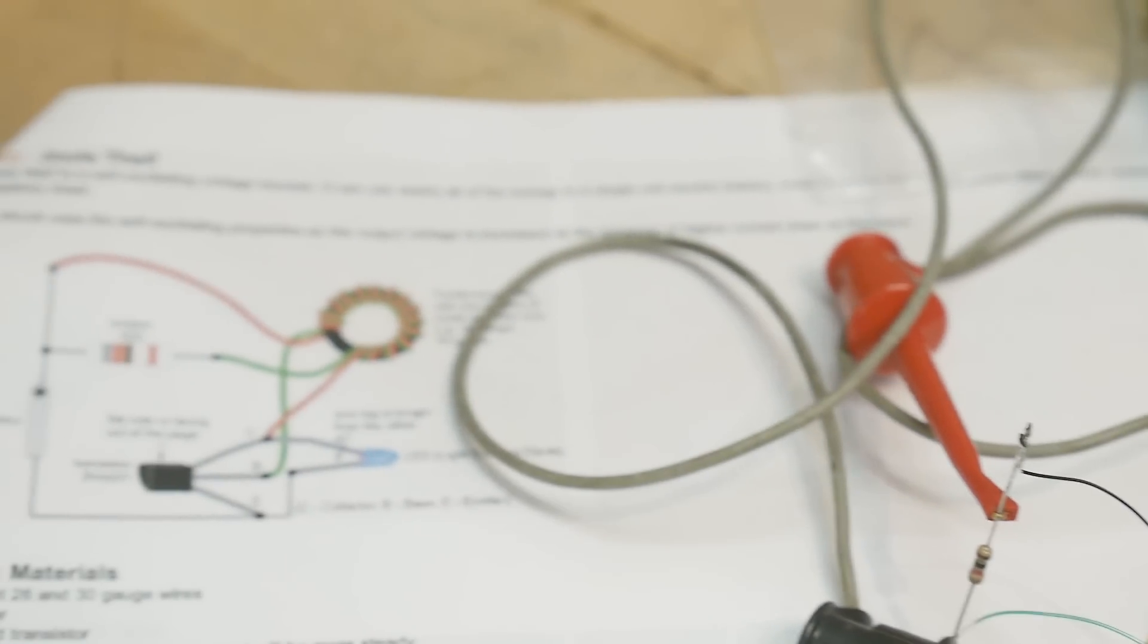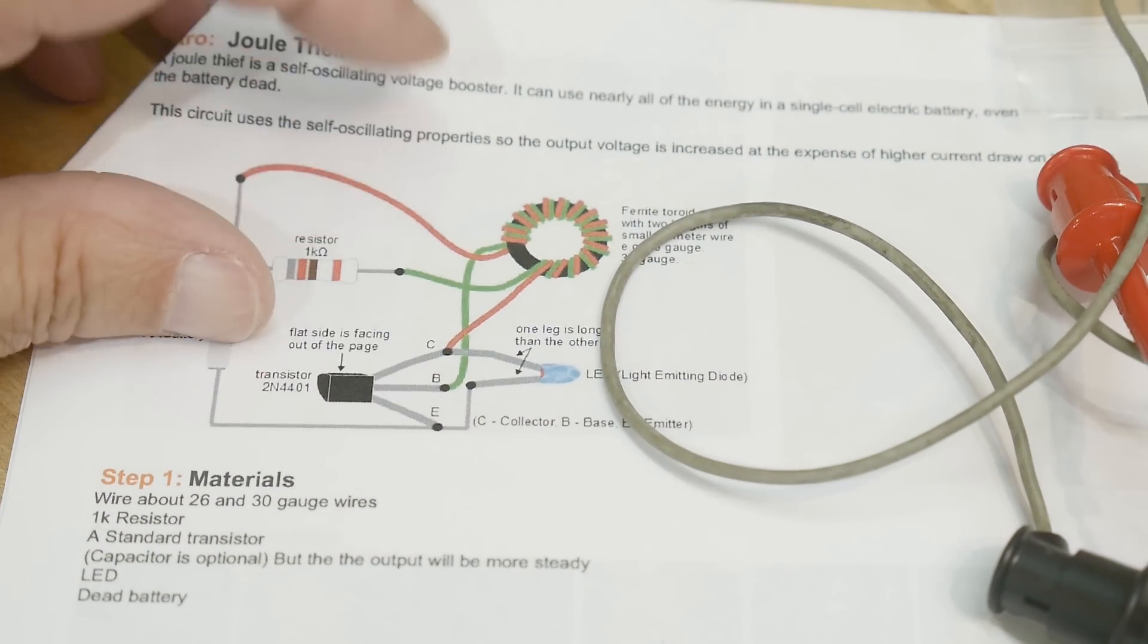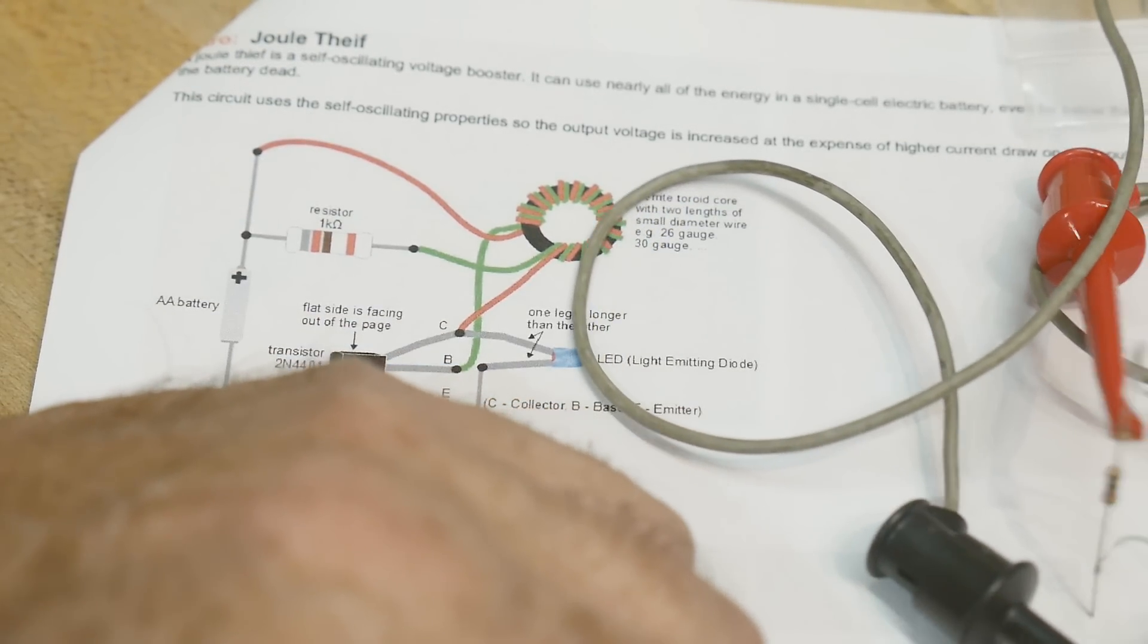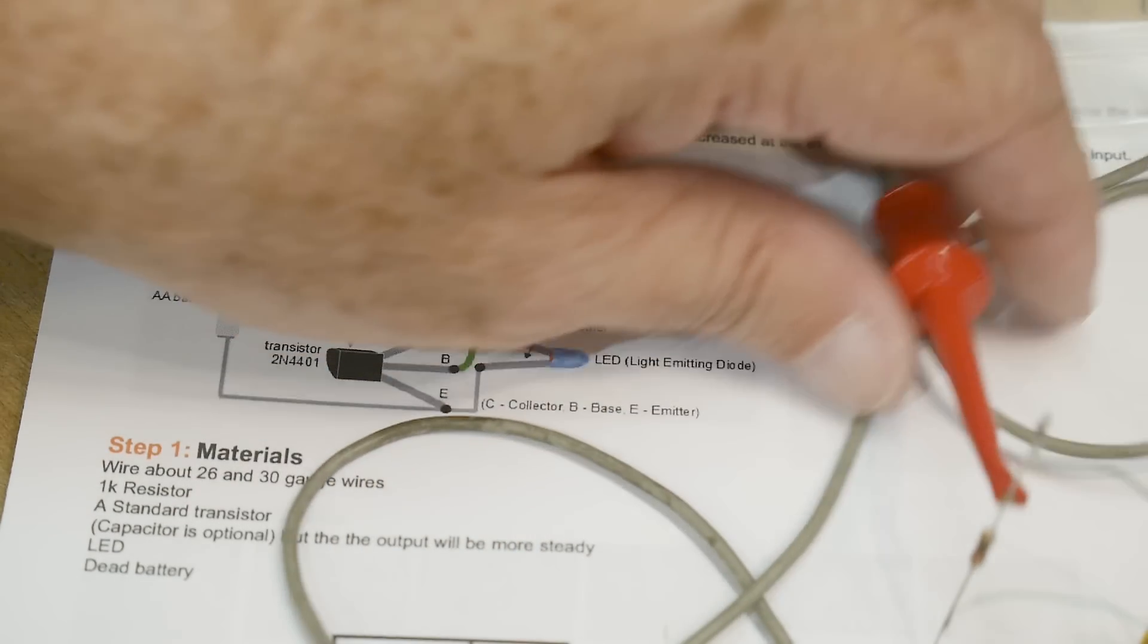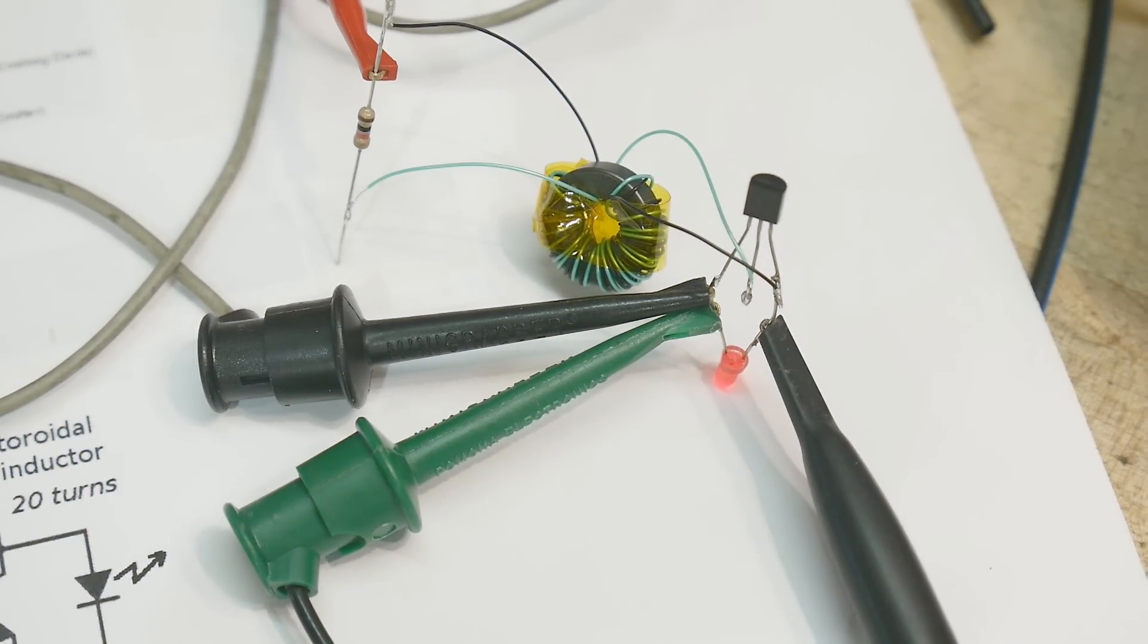That is a jewel thief circuit for the day. Never built one before. And it worked first time. Like I said, I don't think it matters too much how many windings you put on. I don't think it matters what transistor you use. You'll probably get some type of result.